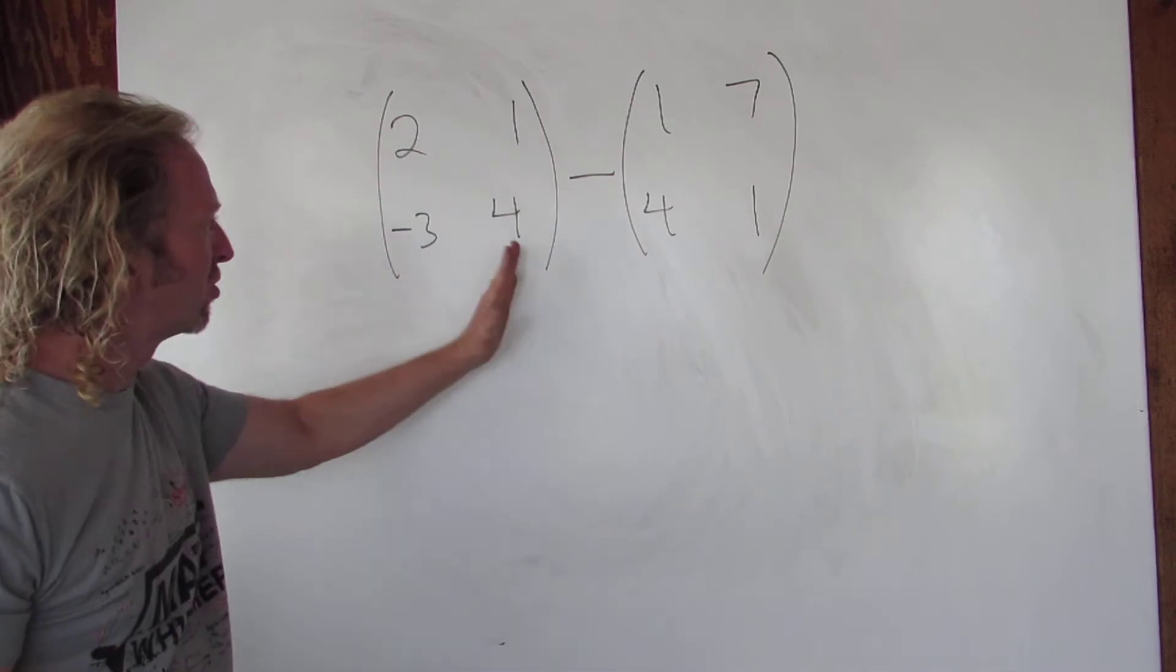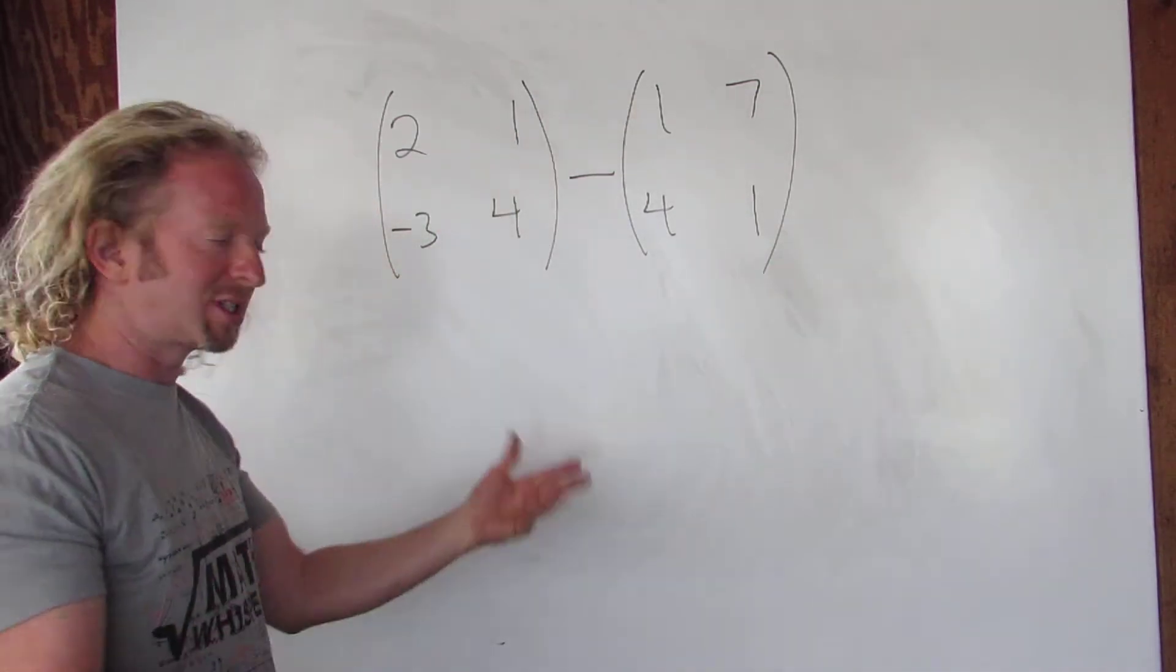This has one, two rows, one, two columns, one, two rows, one, two columns, so we're okay, we can subtract. Let's go ahead and do it.